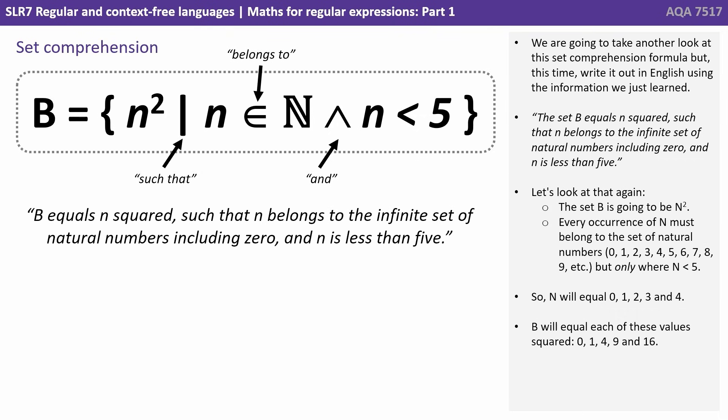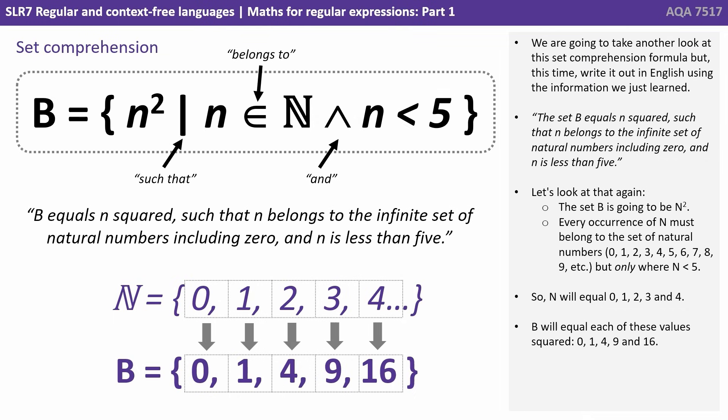Let's look at that again. The set B is going to be N squared. Well every occurrence of N must belong to the set of natural numbers 0, 1, 2, 3, 4, etc, but only where N is less than 5. So N will be equal to 0, 1, 2, 3, 4. B will equal each of these values squared 0, 1, 4, 9, and 16. So that's our set.